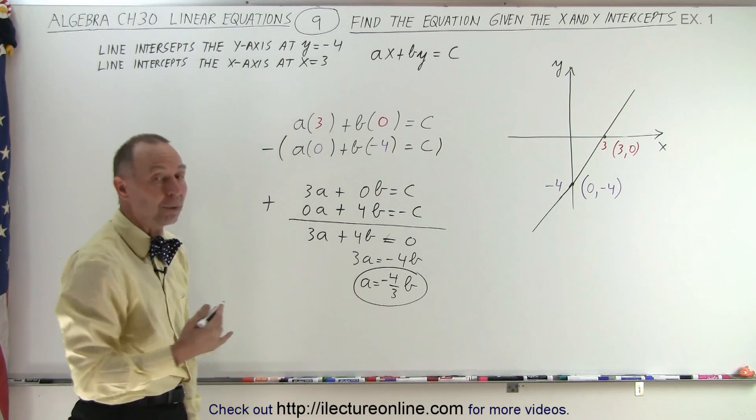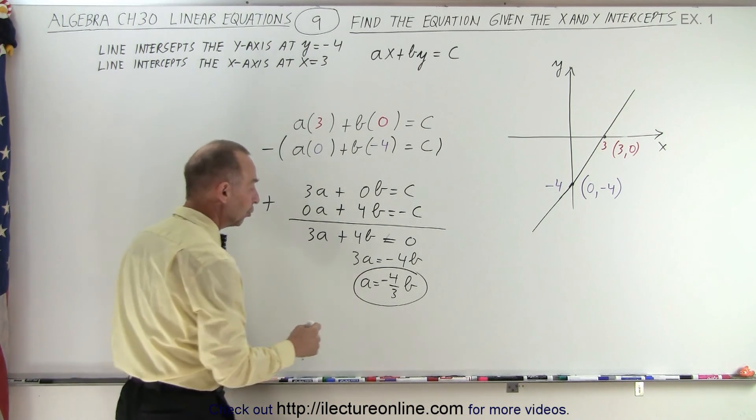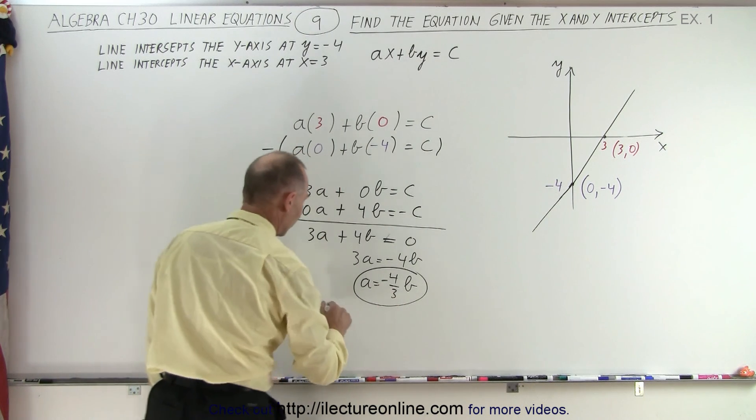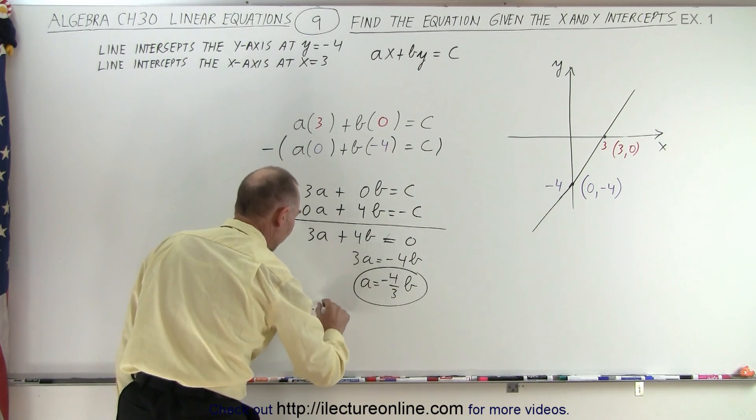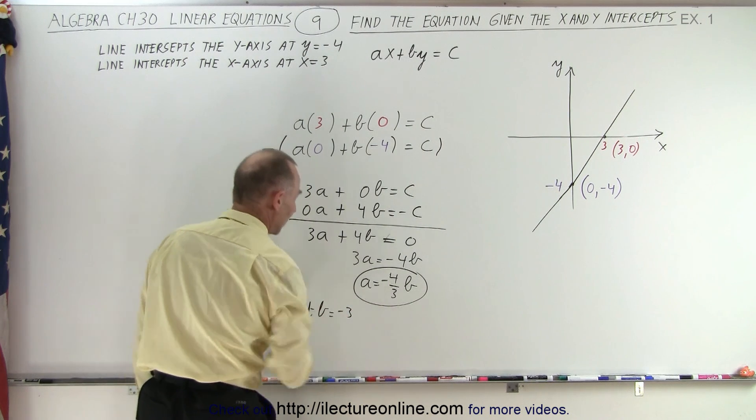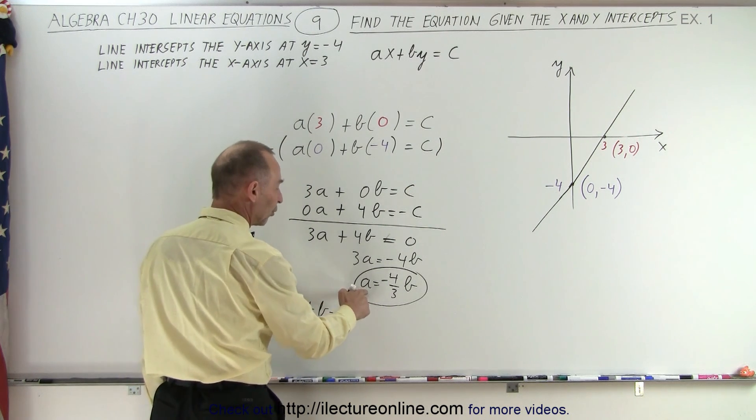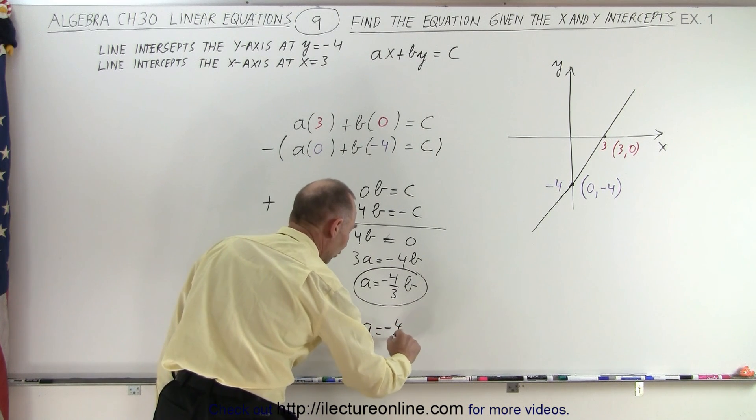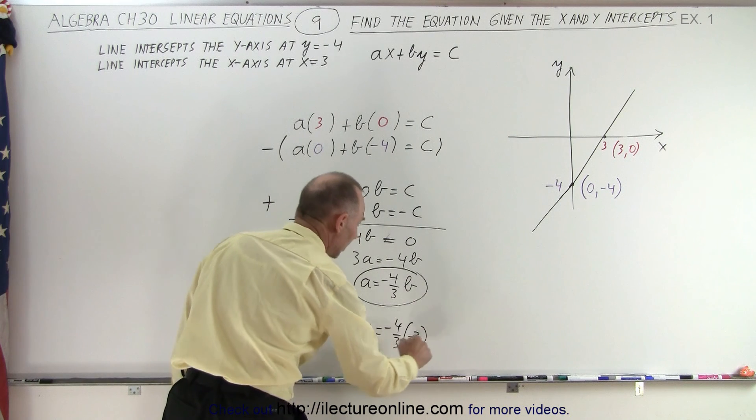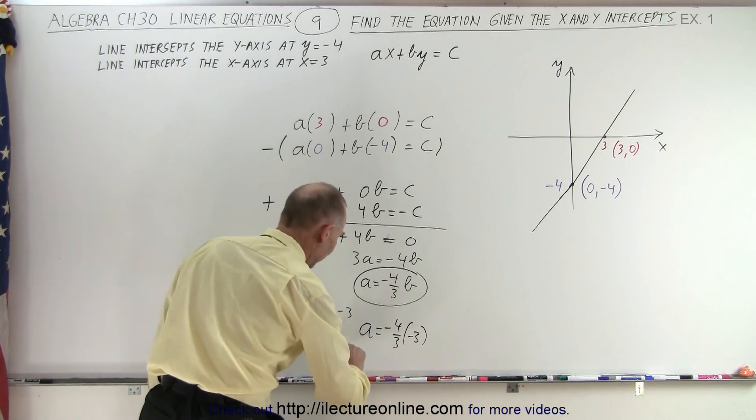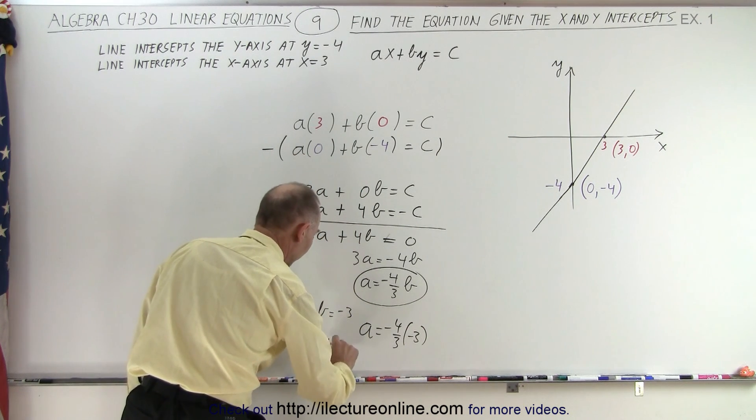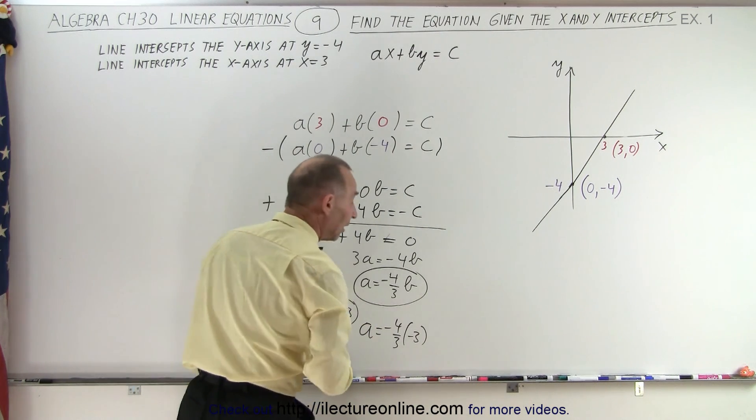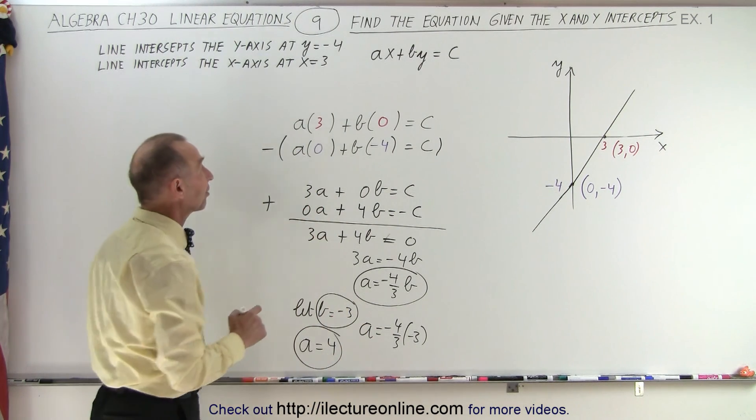Now, I'm going to plug in an arbitrary value for b. I can do so by taking the negative and the denominator and making that b. So, I'm going to let b equal negative 3. If I do so, I can find the corresponding value for a. So, that means that a is going to be equal to negative 4 thirds times negative 3. Notice the negative 3s cancel out. And we end up with a equals 4. So, we have b equals 3, a equals 4. And those are two of the three values I'm looking for.